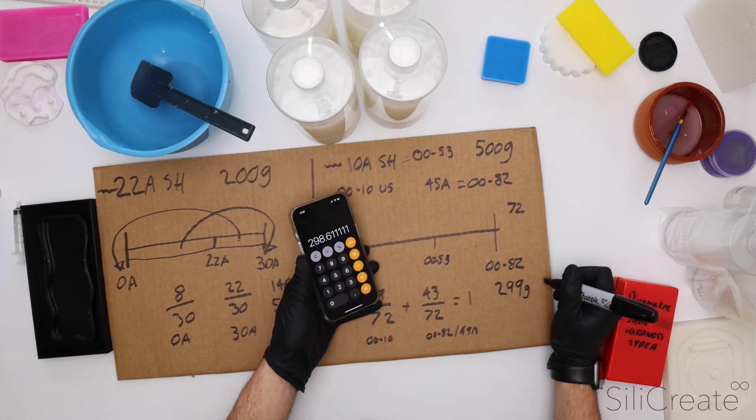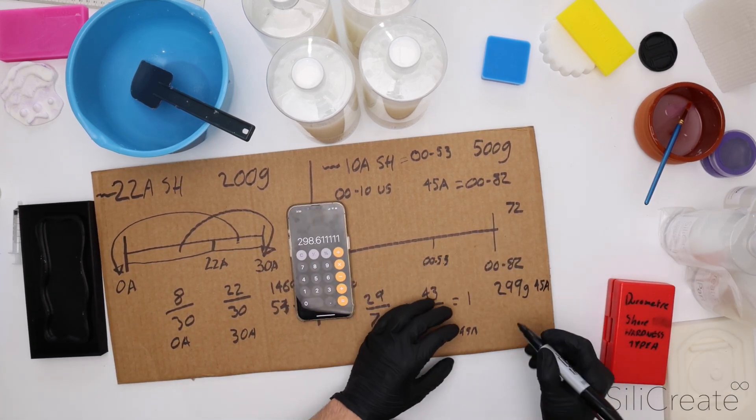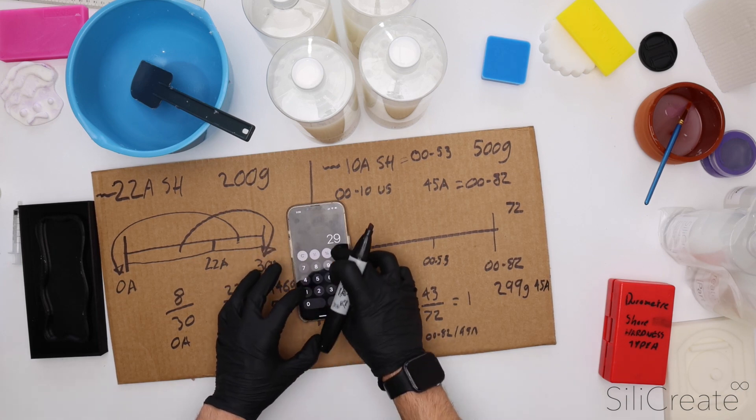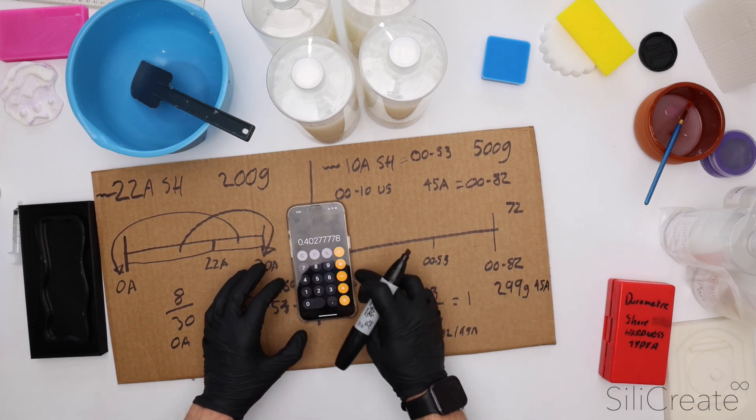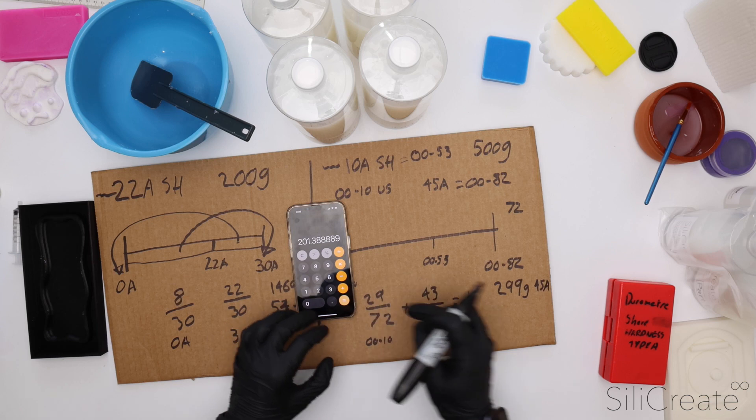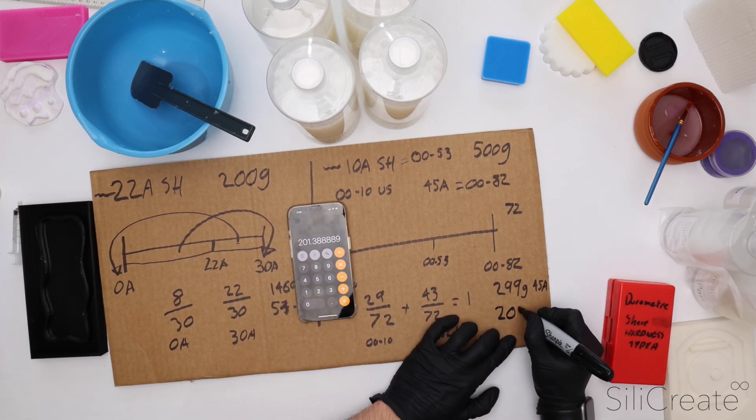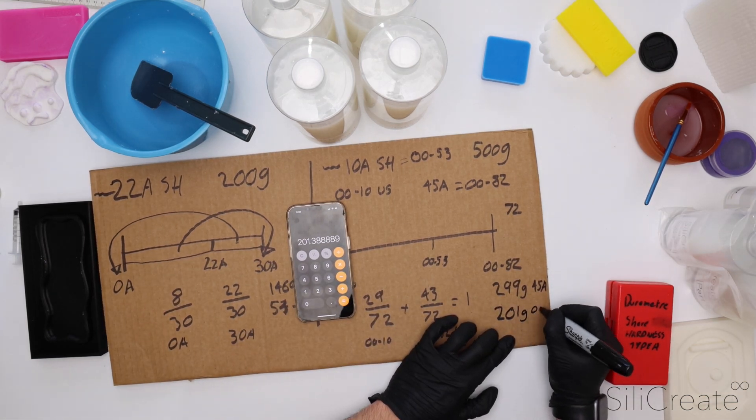And we're going to need 29 divided by 72 times by 500. We're going to need 201 grams of the 0010.